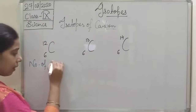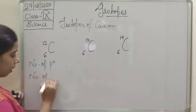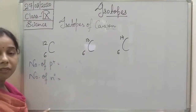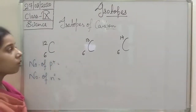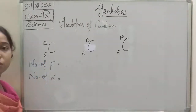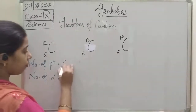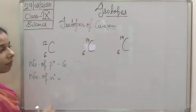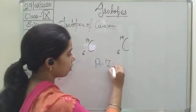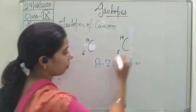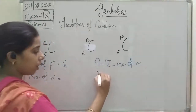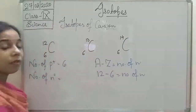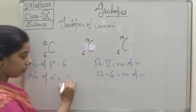Number of protons equals the atomic number, which is 6. For carbon-12, number of neutrons equals A minus Z: 12 minus 6 equals 6 neutrons. So number of protons is 6 and number of neutrons is 6.